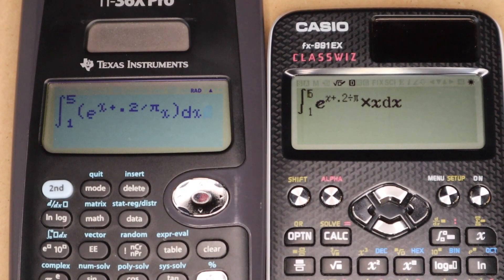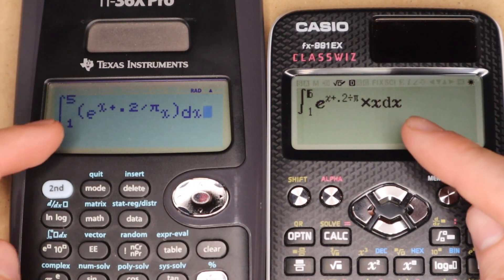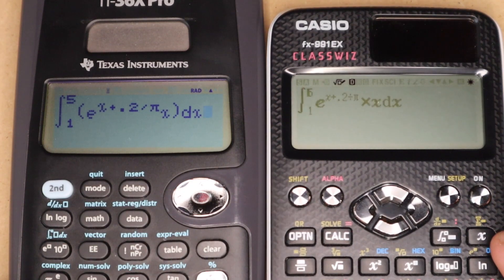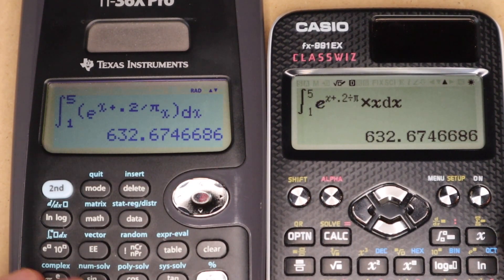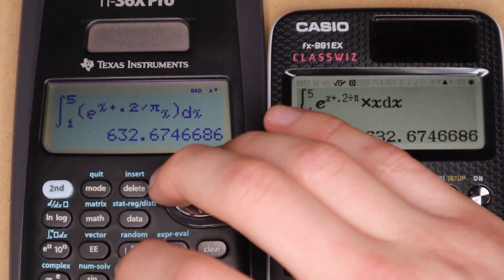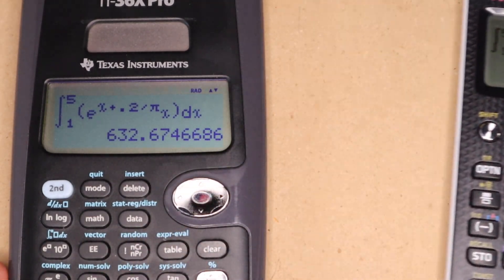And then just to kind of give you an idea of relative calculation speed, I have another similarly priced Casio calculator here. And I have this integral expression entered on both of them, and I'm going to press enter right now. And as usual, the Casio calculator is quite a bit faster, but for the most part, this calculator is fast enough for most of the things you will be doing on it.